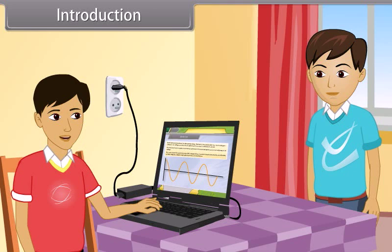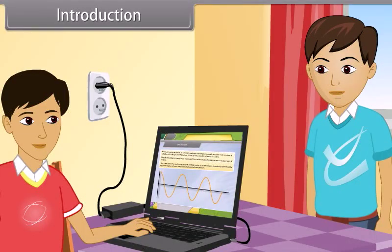I will complete this in 10 to 15 minutes. Okay, I want to ask you something. Yeah, sure. You must know that a laptop works on DC voltage as it has a battery, and a laptop gets charged by plugging the charger into AC voltage. My question is: how is it possible that a laptop works on AC voltage?